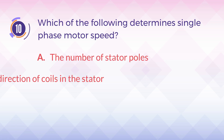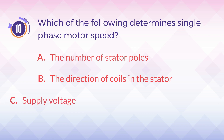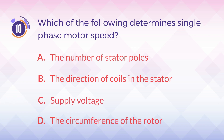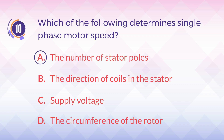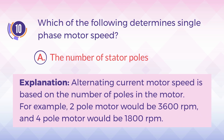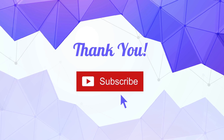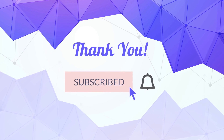Number ten: which of the following determines single phase motor speed? A) the number of stator poles, B) the direction of coils in the stator, C) supply voltage, D) the circumference of the rotor. The correct answer is A) the number of stator poles. Explanation: alternating current motor speed is based on the number of poles in the motor — for example, a two pole motor would be 3600 RPM and a four pole motor would be 1800 RPM. Thanks for watching — don't forget to like, share, and subscribe to our channel for updated videos every week.